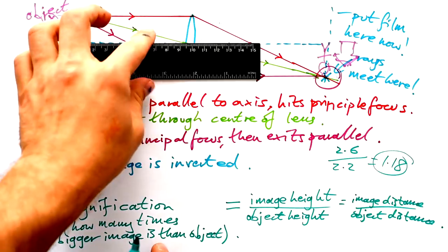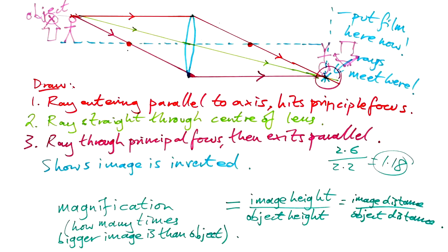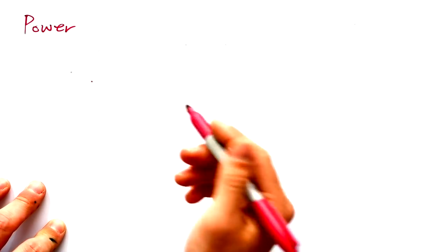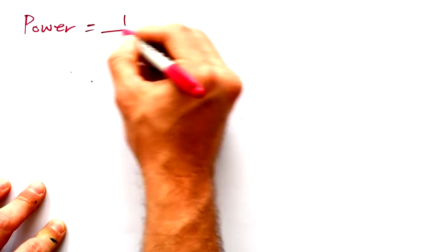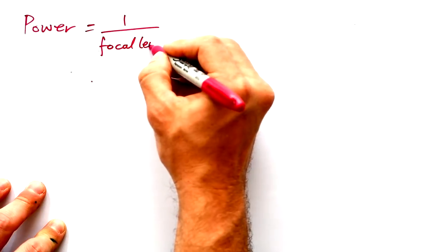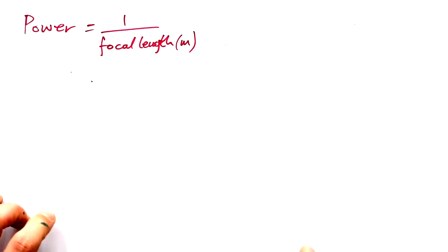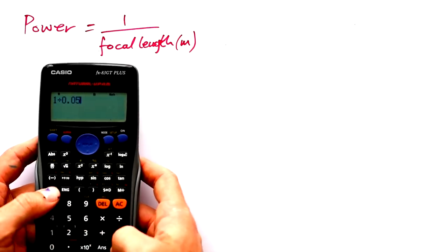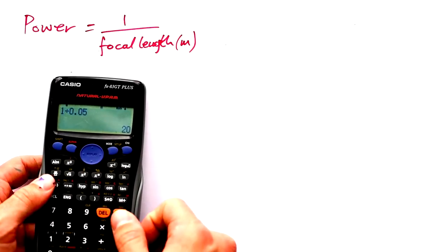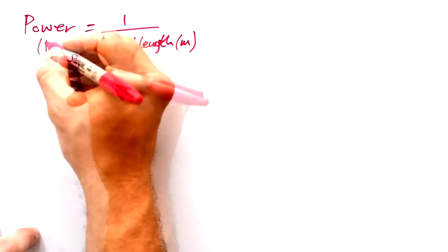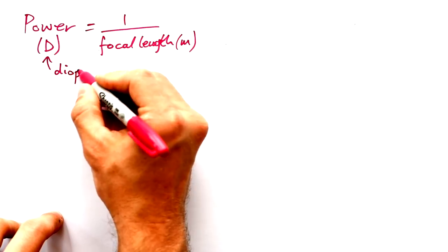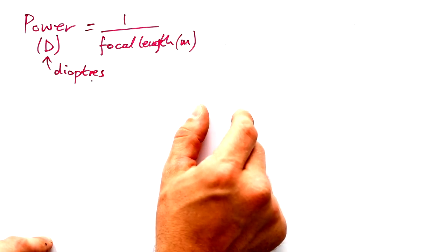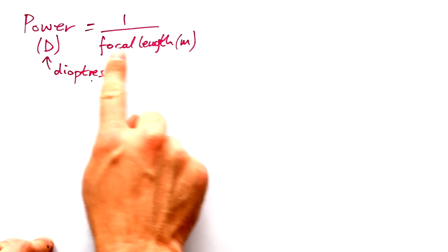That's all you need for GCSE. For A-level there's more maths. The first thing is the power of a lens — not work done or energy, but power equals 1 divided by the focal length in meters. My focal length was 50 millimeters, so 0.05 meters, giving a power of 20. The unit is capital D — diopters. This makes sense: a thicker lens has a shorter focal length and the principal focus is closer to the lens, so shorter focal length means higher power.